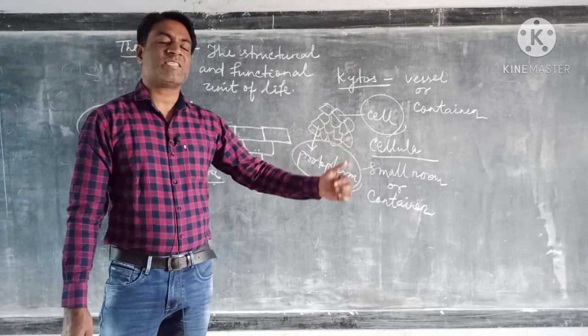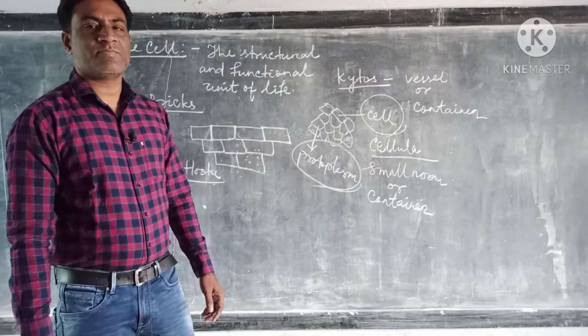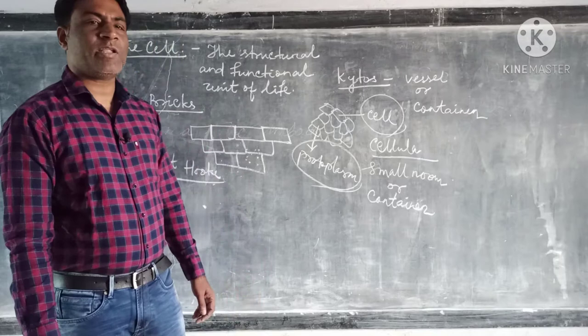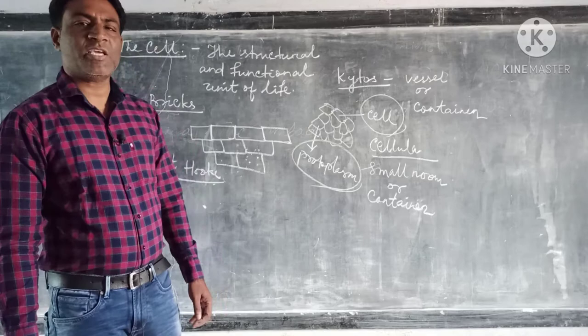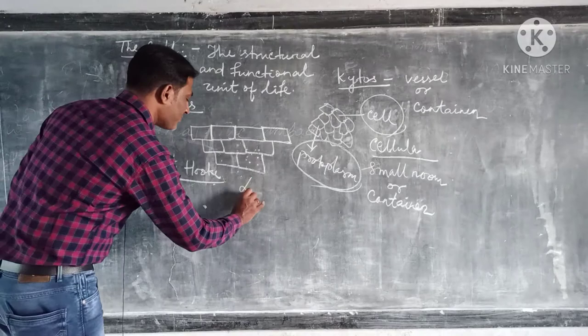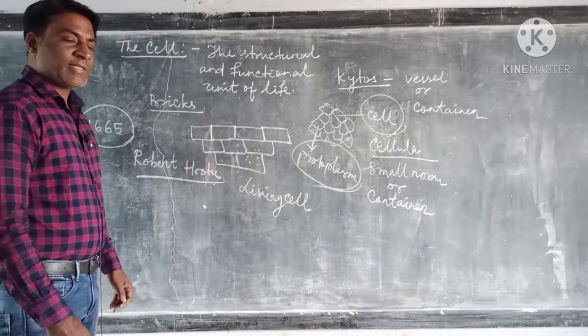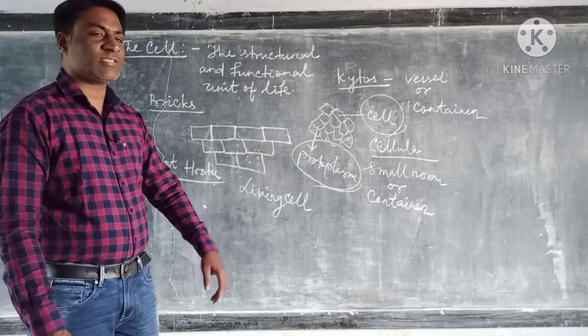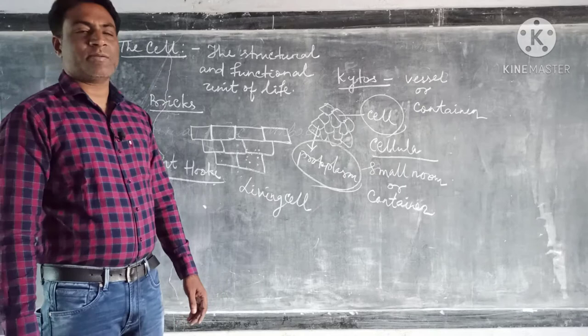So we can say that Robert Hooke discovered dead cell. Later on, another scientist named Anthony van Leeuwenhoek, by his own microscope, he observed the living cell. That means the protoplasm is present inside the cell, and the scientist is Anthony van Leeuwenhoek.